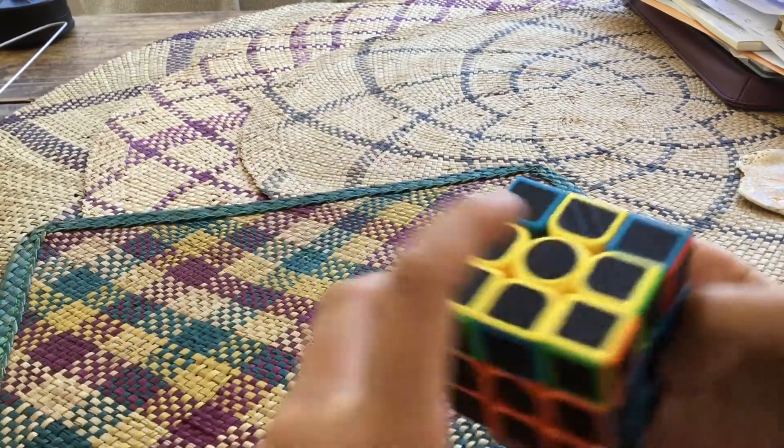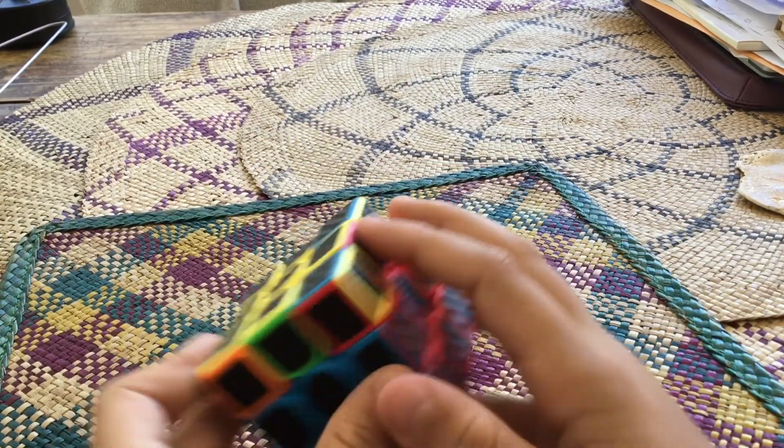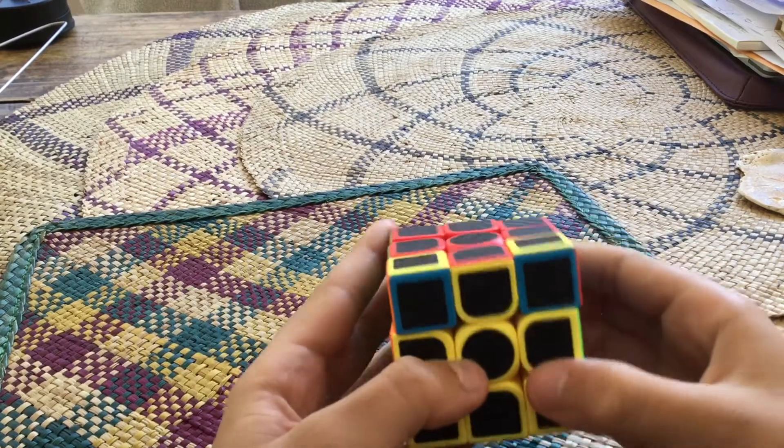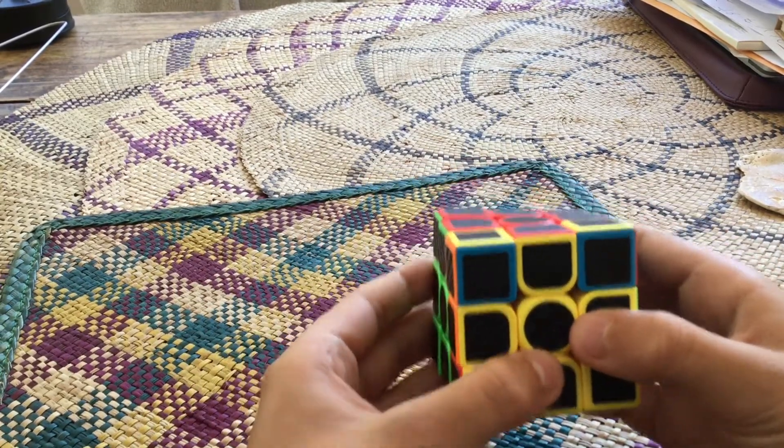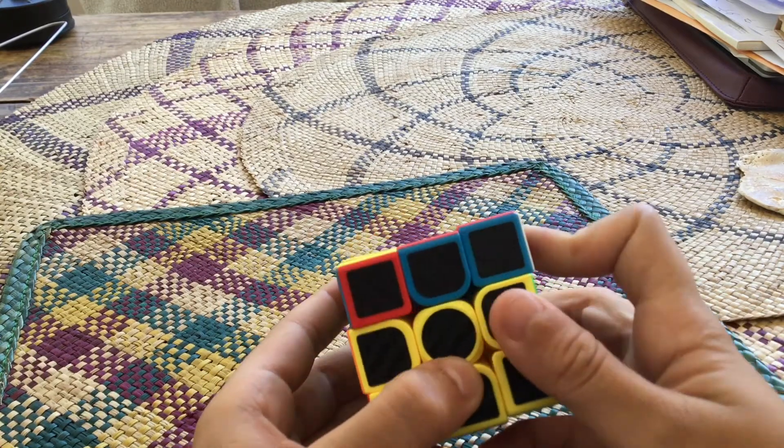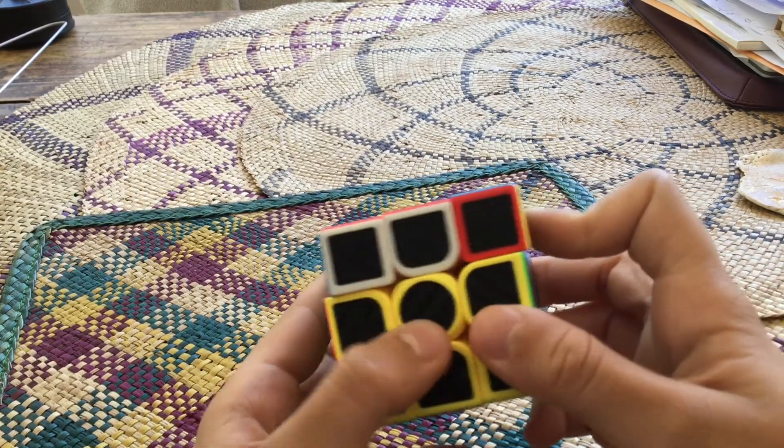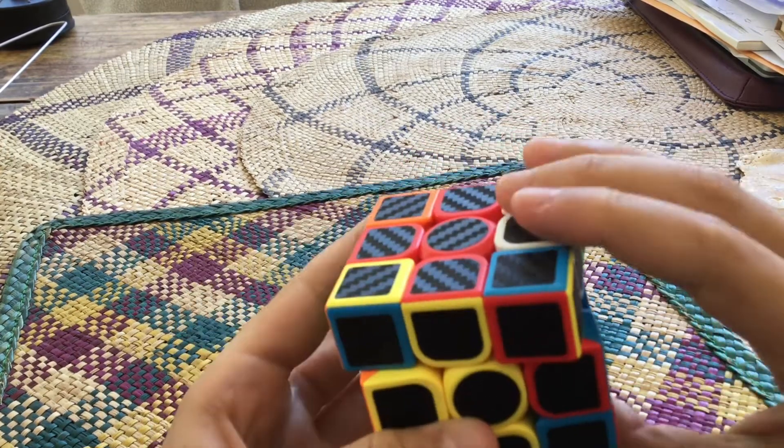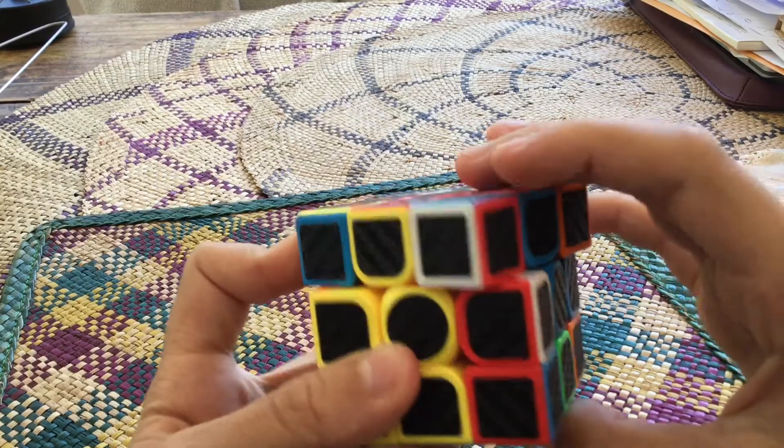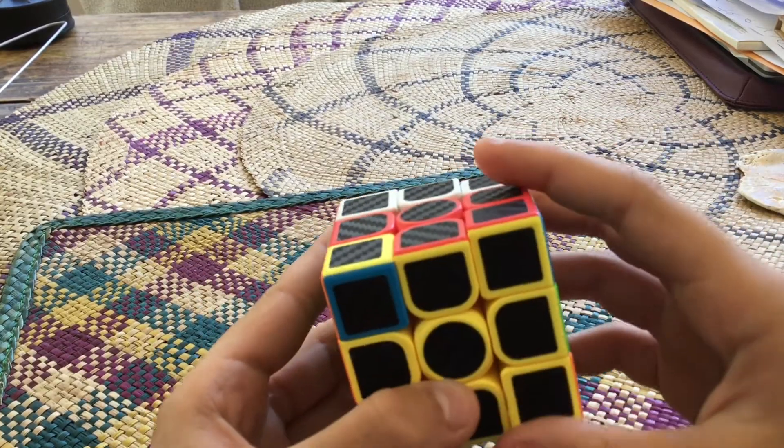Now you need to do two more algorithms. Now this is the hardest part of the whole thing, so be careful. Now you're going to move it to your yellow side and do the most modified algorithm, so just pay attention. Now most people mess up here, so watch the video twice to double check. Now do the same on the other side.